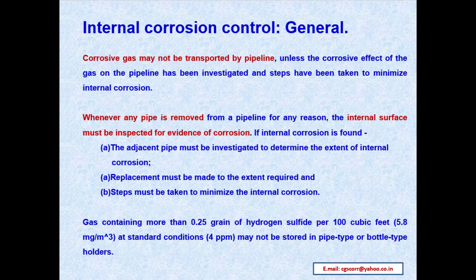Internal corrosion control in general: corrosive gas may not be transported by pipeline unless the corrosive effect of the gas on the pipeline has been investigated and steps have been taken to minimize internal corrosion. Whenever any pipe is removed from a pipeline for any reason, the internal surface must be inspected for evidence of corrosion. If internal corrosion is found, the adjacent pipe must be investigated to determine the extent, replacement made as required, and steps taken to minimize internal corrosion.